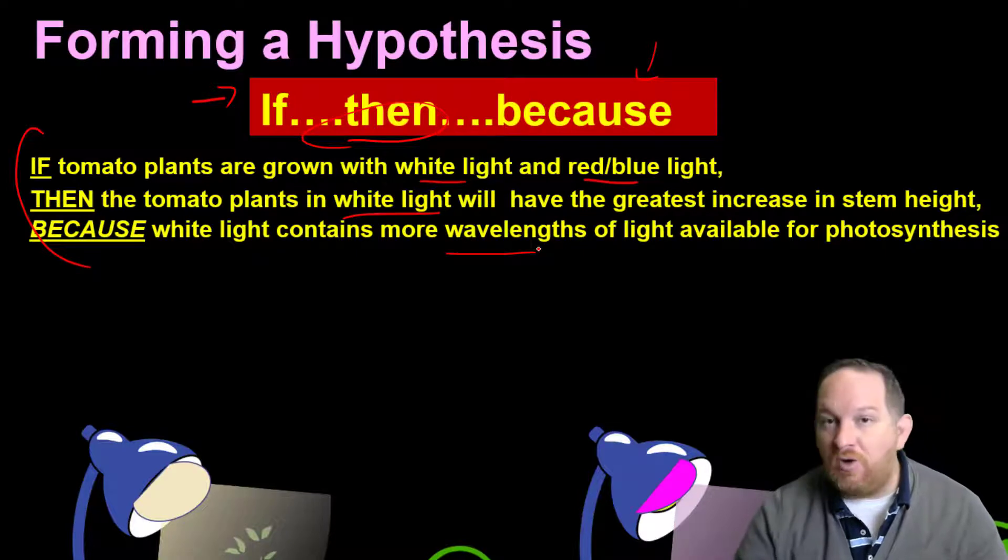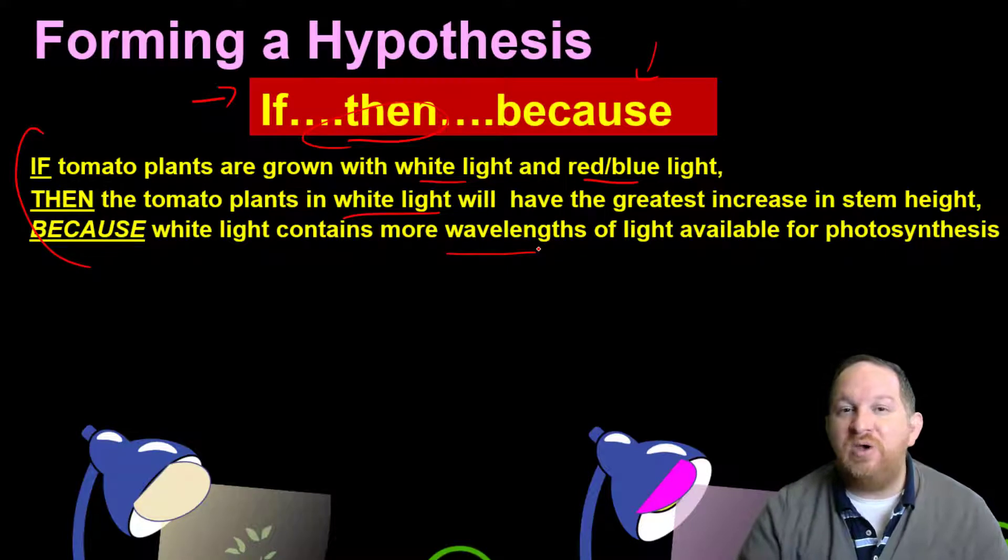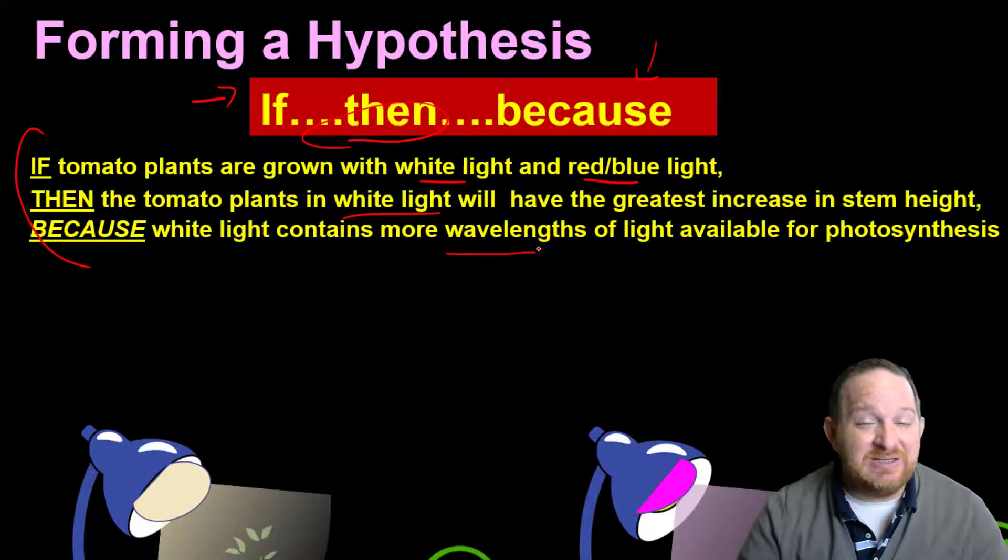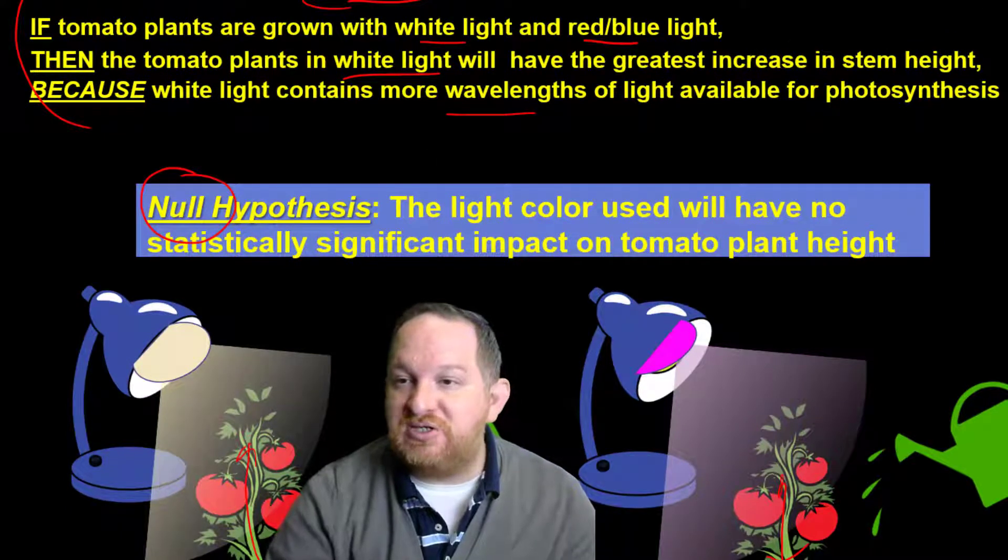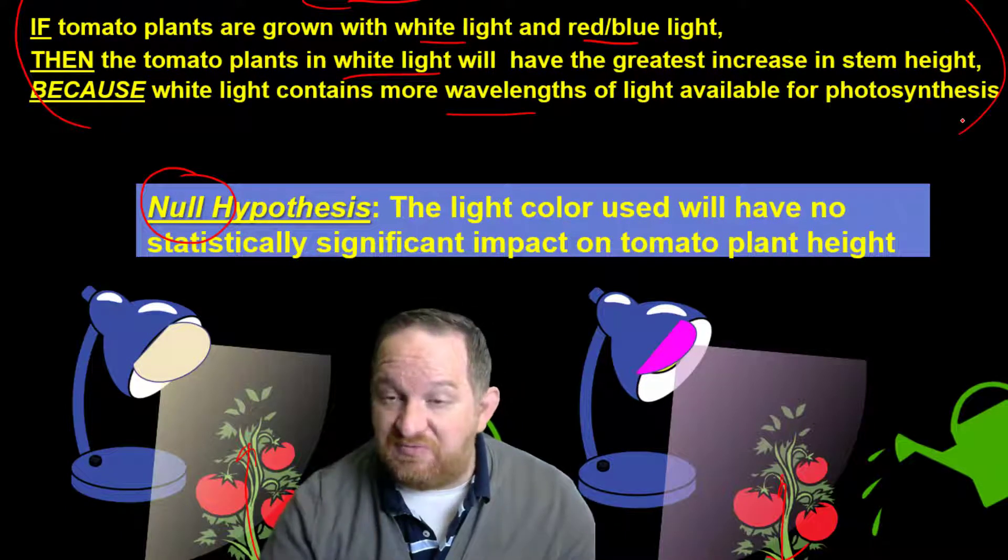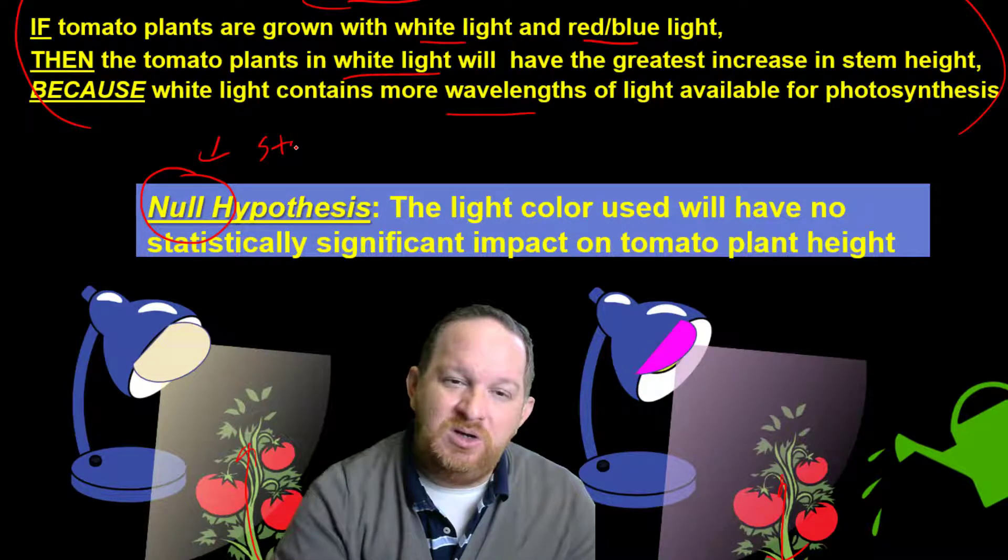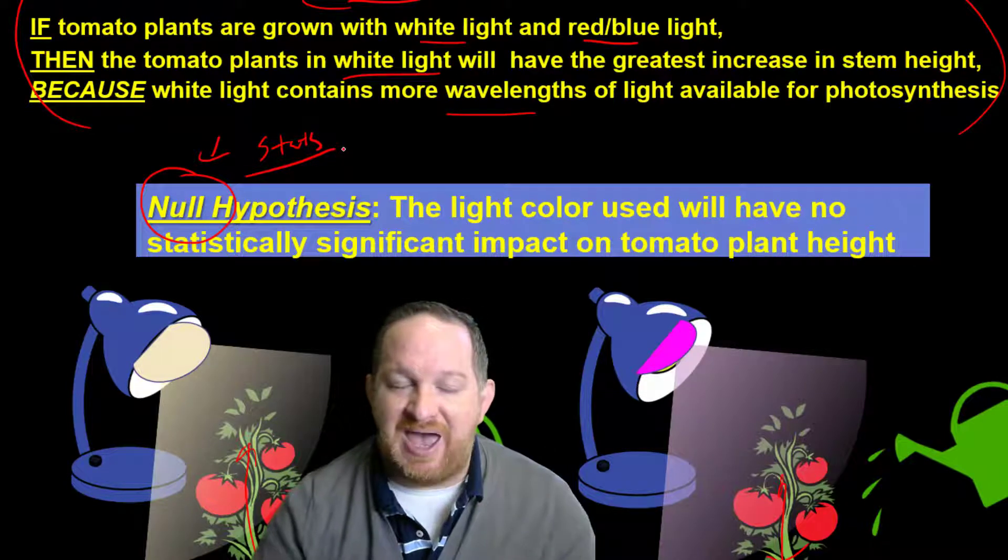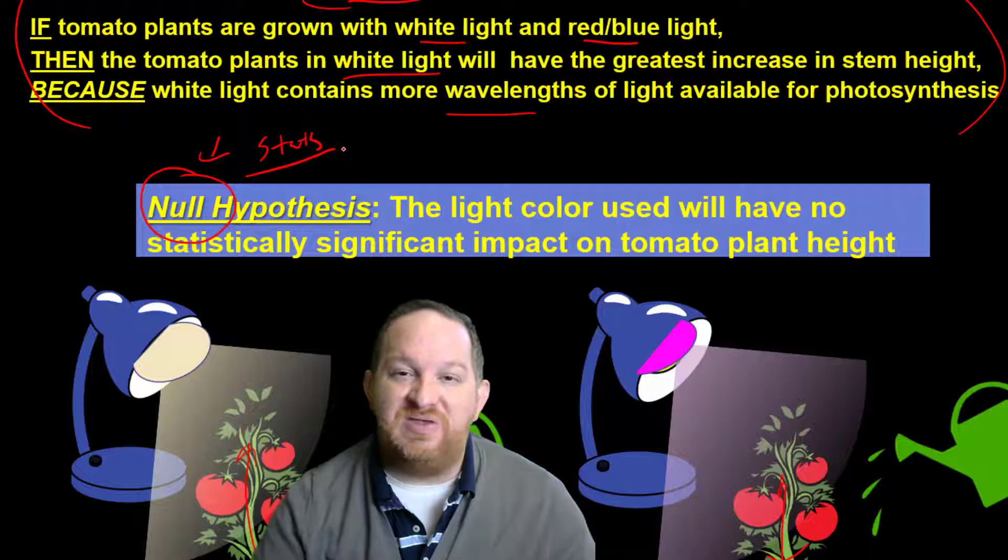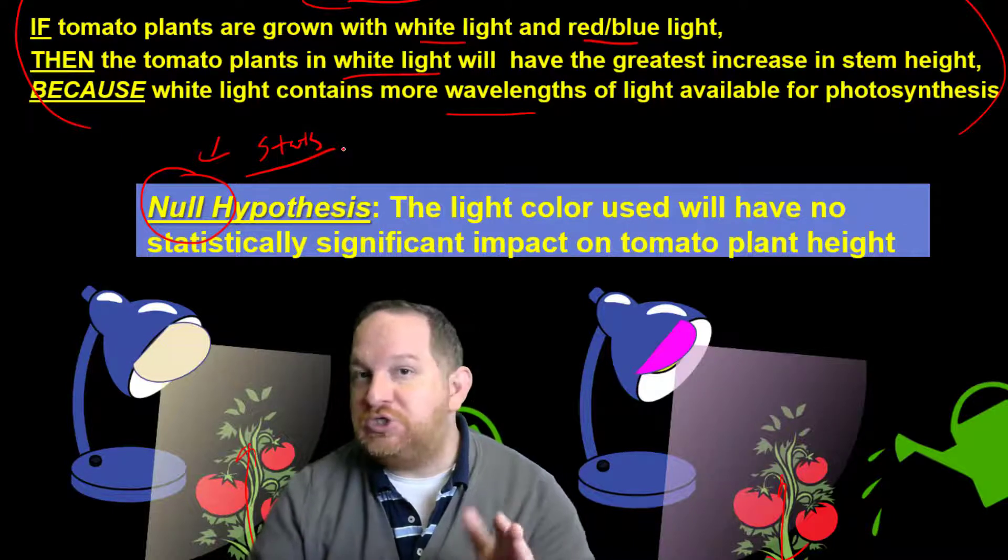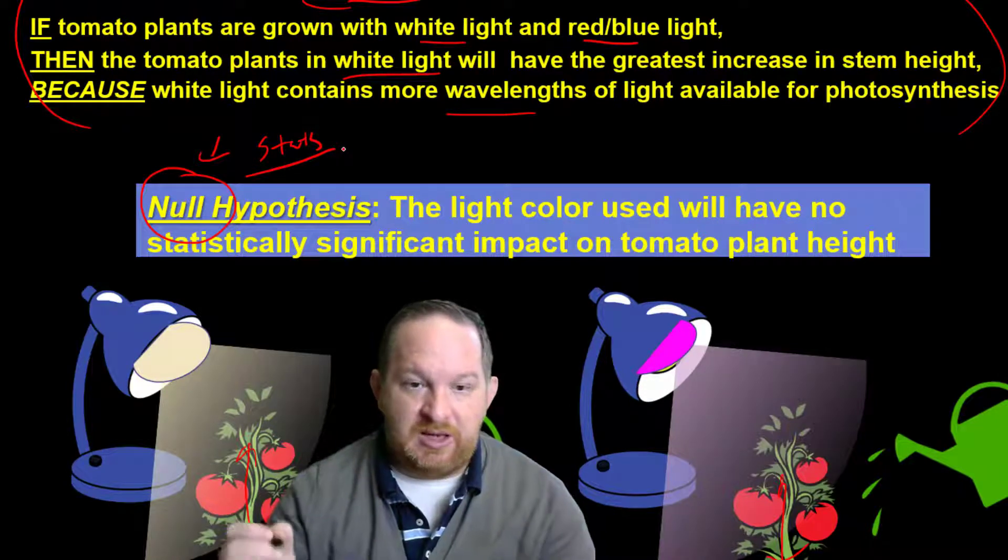Now, later on, you'll have to do some statistical analysis. And the statisticians always want us to state something which is called a null hypothesis. So this might just be sort of your general hypothesis for your experiment. But a null hypothesis is really going to help us later on when we start to do some stats. What is a null hypothesis? Well, a null hypothesis is basically saying that we're going to assume that there's going to be no difference in these two things.